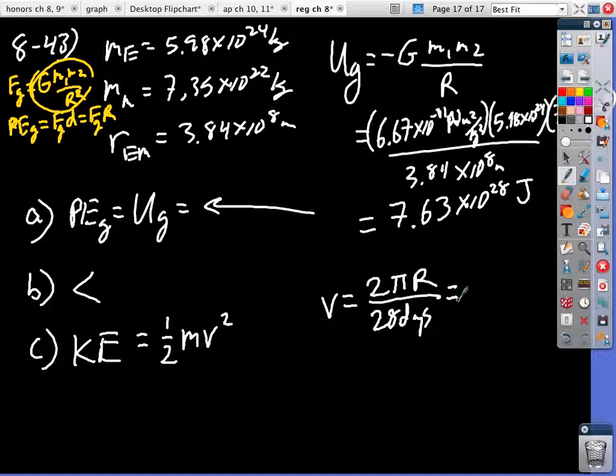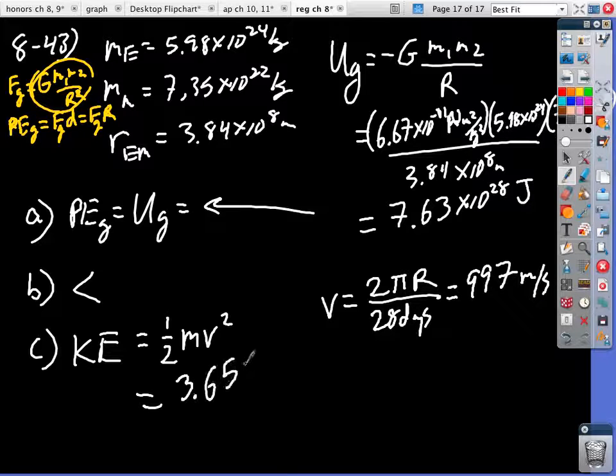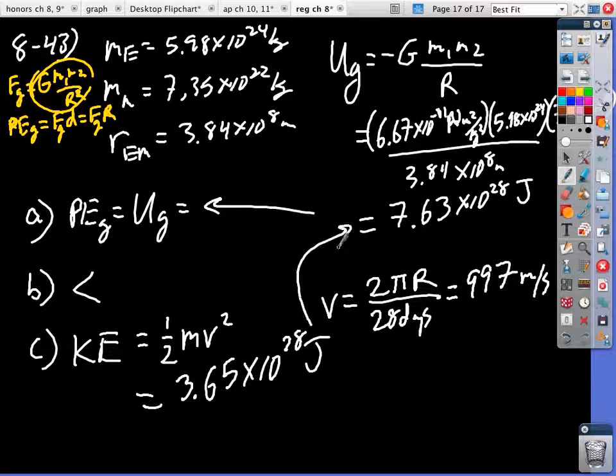So we get 997 meters per second. So I take that times 0.5 times the mass of the Moon, which is 7.35 times 10 to the 22. And we get 3.65 times 10 to the 28 joules. And we can see that that is indeed less than that. And thus, the moon stays here.